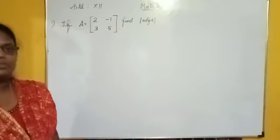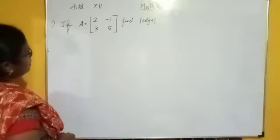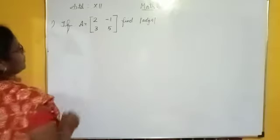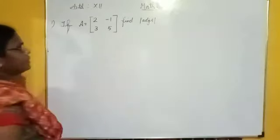Good morning students. Now let us see the question. If A is a 2 by 2 matrix given as 2 minus 1, 3, 5, from this we have to find the determinant of adjoint of A.